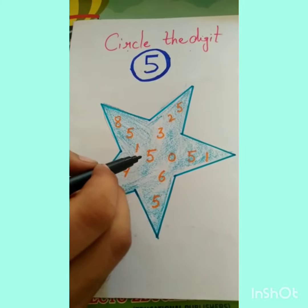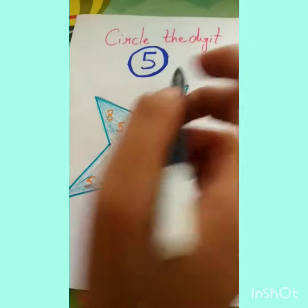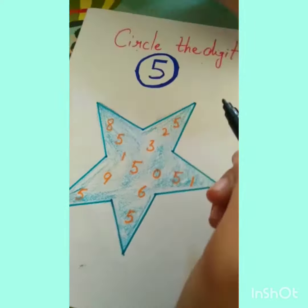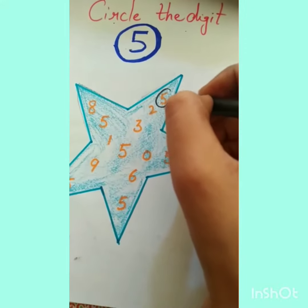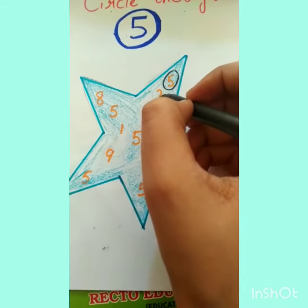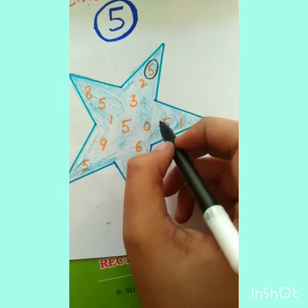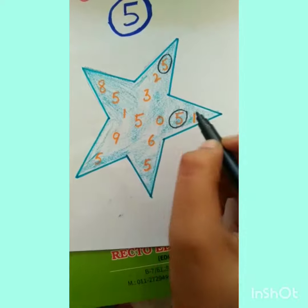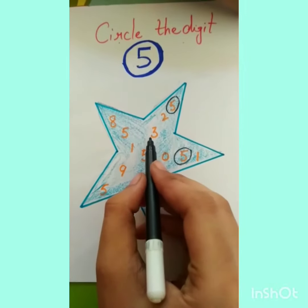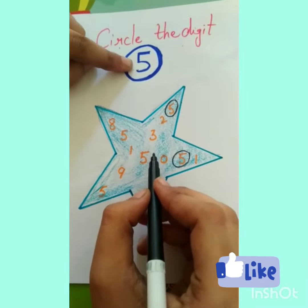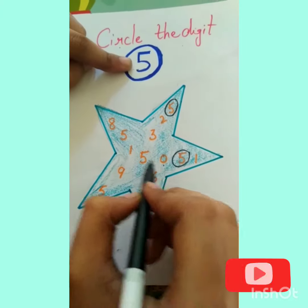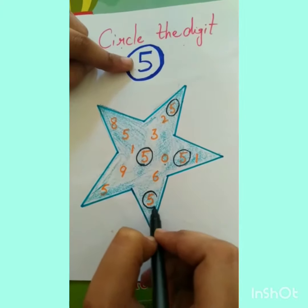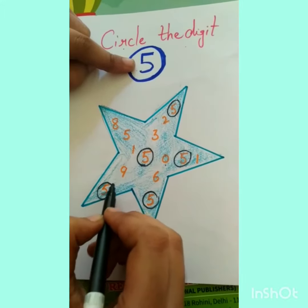Here is a 5, so we have to circle it. That's good. Now this is 2, here is a 5 — yes, circle it, very good! This is 0, this is 3. Here is the same number 5 — circle it! We have to circle all the 5s in this star.